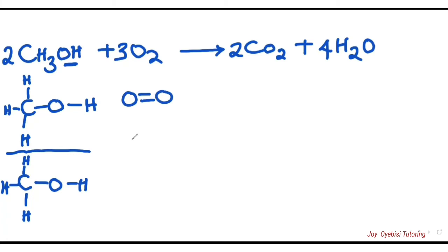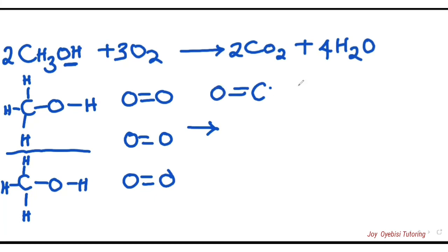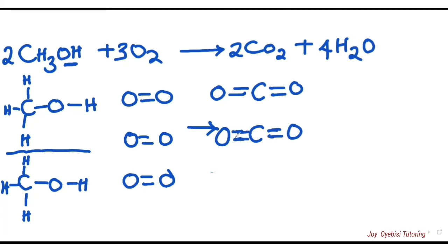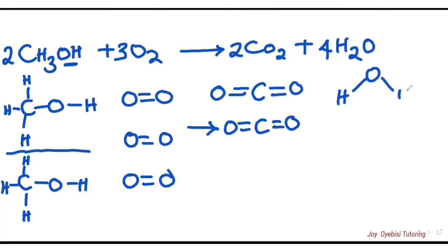On the product side, we have two CO₂ molecules — carbon is in the middle double bonded to oxygen on each side. If you've done Lewis structures it helps you understand how these structural formulas are formed. For water, we have four molecules, so write those down as well.